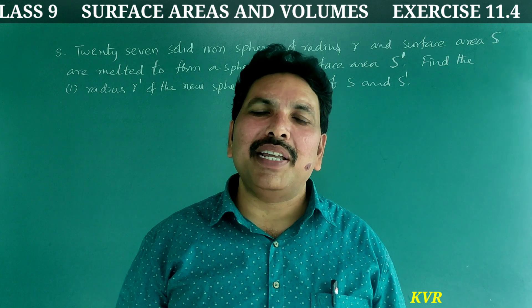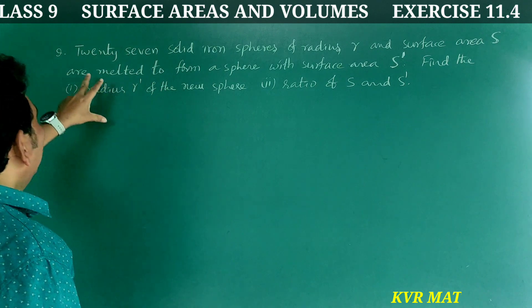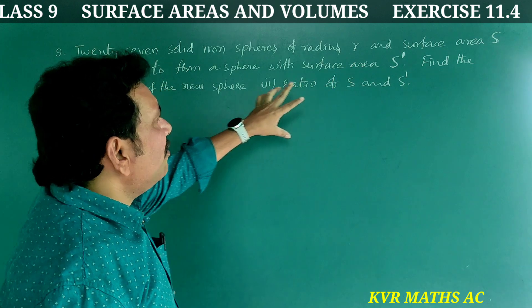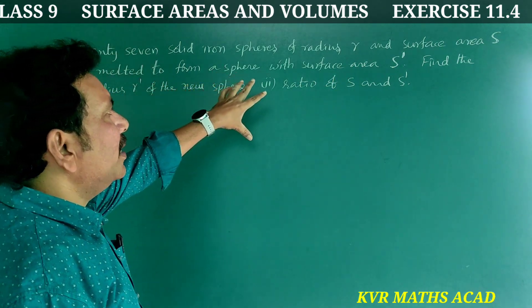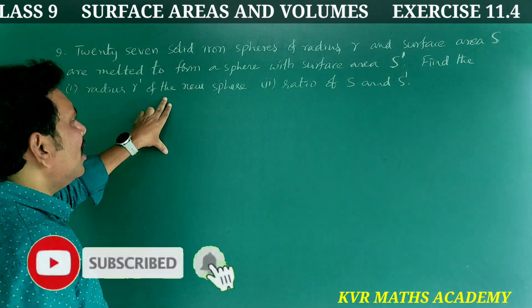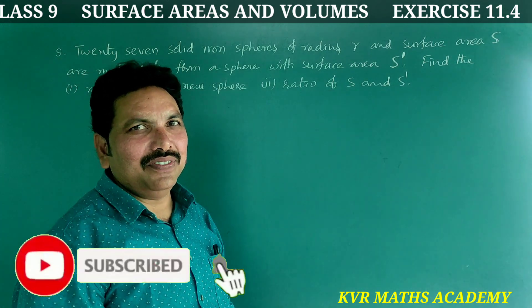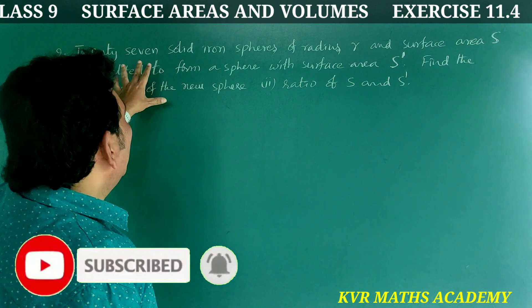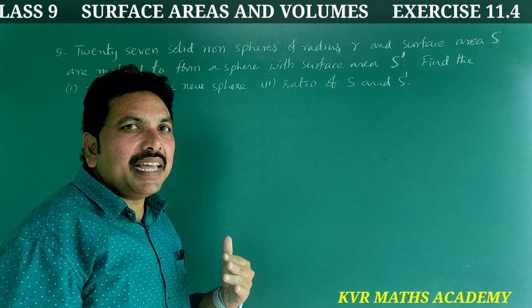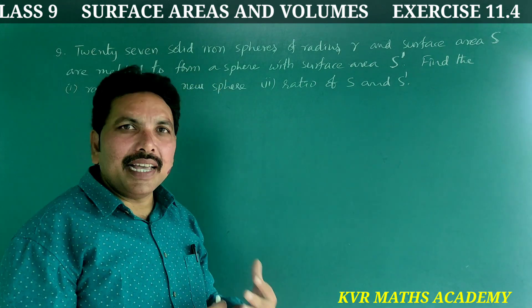Question 9: 27 solid iron spheres of radius r and surface area s are melted to form a sphere with surface area s dash. Find the radius r dash of the new sphere, and the ratio of s and s dash.